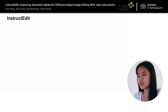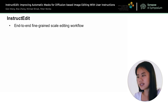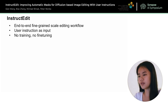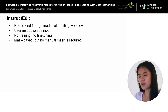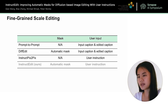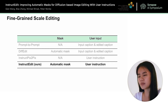Therefore, we propose our diffusion-based image editing framework, InstructEdit. InstructEdit is an end-to-end fine-grained scale editing workflow. It can directly accept user instructions as input, rather than captions. It has the same merits as the baseline methods: no training, no fine-tuning, only utilizing pre-trained modules. InstructEdit is also a mask-based method to support fine-grained scale editing. However, no manual mask is required from the user. The mask is automatically generated within the pipeline. While baseline methods are either not mask-based or only accept captions as input, our method generates masks automatically and directly accepts user instructions.